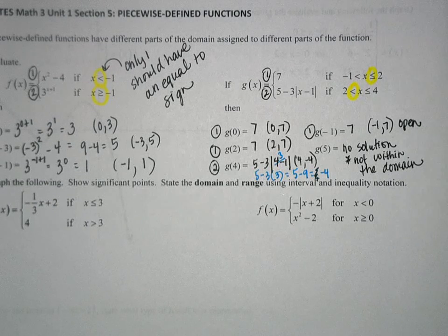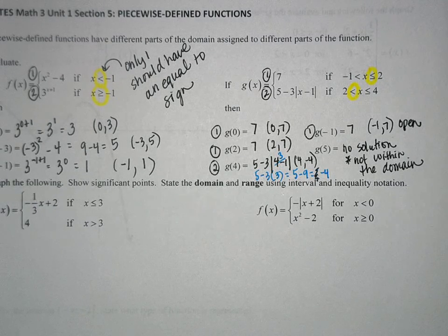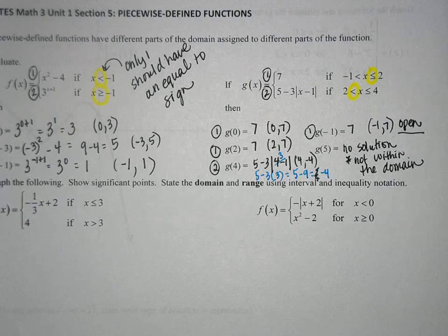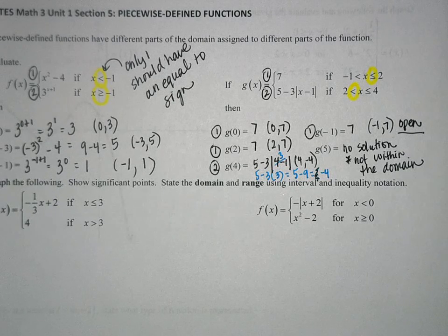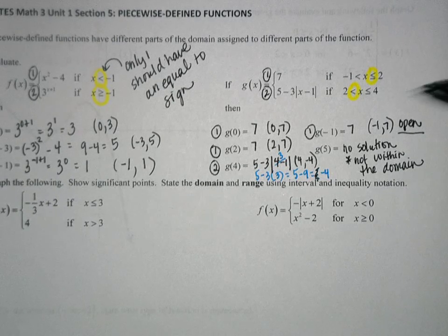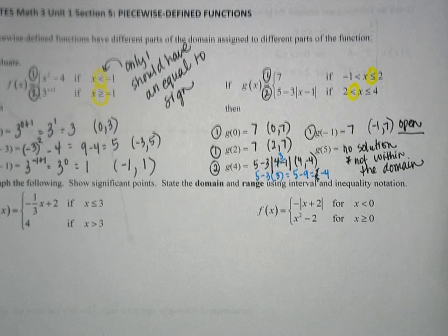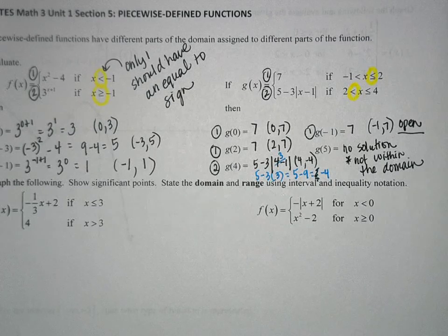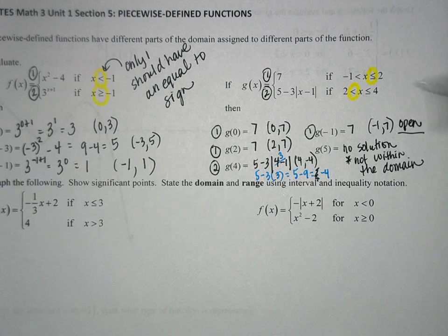Anytime it doesn't have the equal to sign, it's open. There really is no equal to this value — it's an open circle.